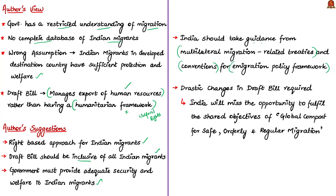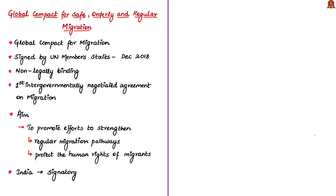The authors tell it should be a visionary and future-proof policy framework. They finally tell that without drastic changes to the draft bill's approach, India will miss the opportunity to fulfill the shared objectives of the Global Compact for Safe, Orderly and Regular Migration — called the Global Compact for Migration in short. This global compact was signed in December 2018 and is a non-legally binding one.